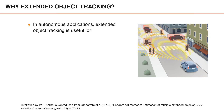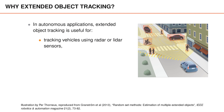Extended object tracking is important in various contexts. If we focus on autonomous applications, such as self-traveling vehicles, extended object tracking is useful for tracking vehicles and pedestrians using, for instance, radar or LiDAR sensors, where a LiDAR is a laser scanner. An alternative approach that we will discuss later is to use deep learning to extract object detections from the LiDAR data, which transforms the problem into a point object tracking problem.